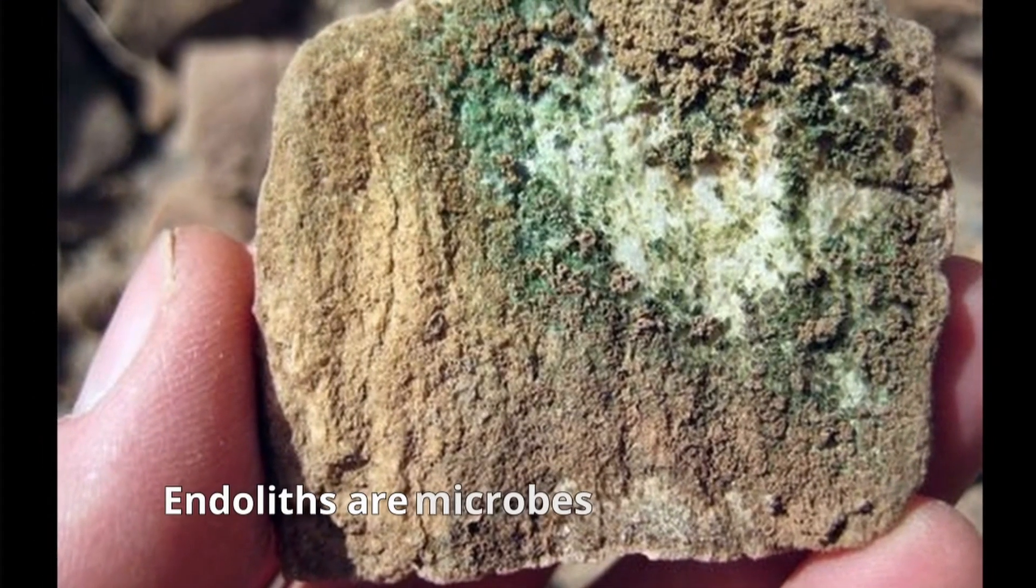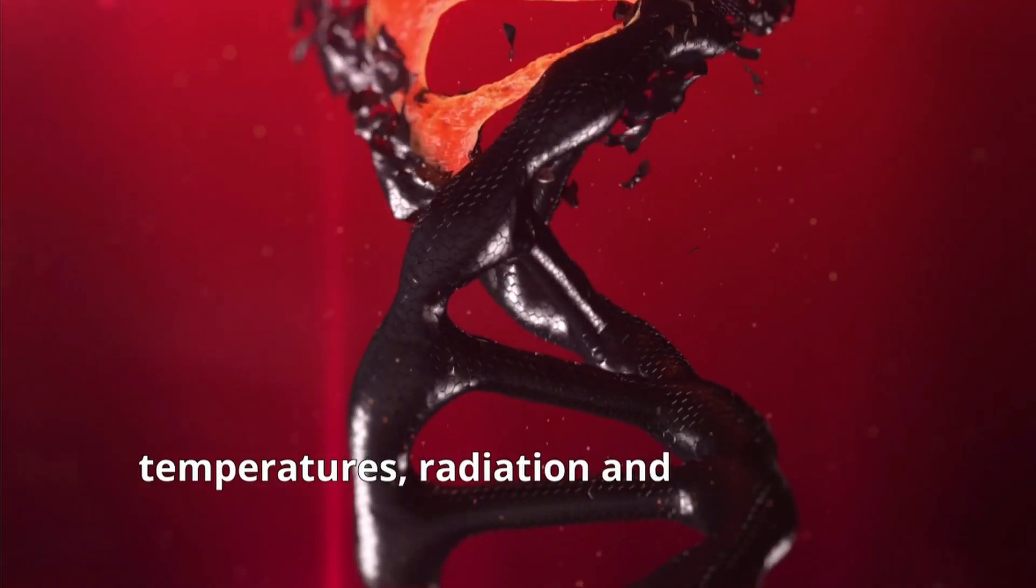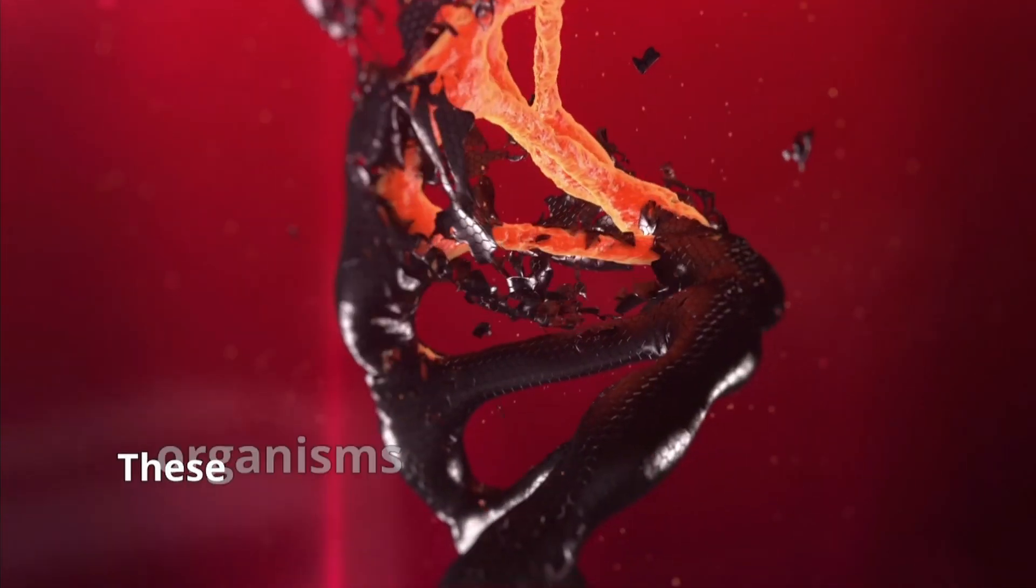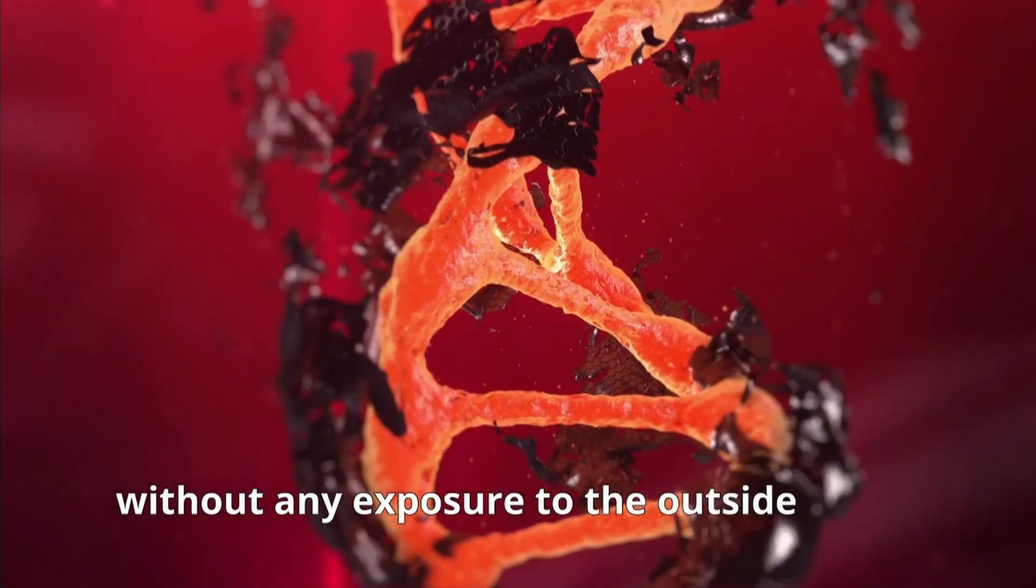Endoliths are microbes that live inside rocks, where they're protected from extreme temperatures, radiation, and other harsh conditions. These organisms can survive for millions of years without any exposure to the outside world.